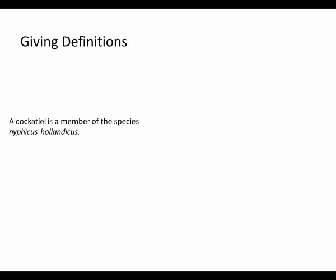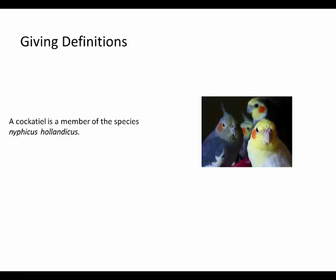For example, if somebody doesn't know what a cockatiel is and they ask you, you could look it up in the dictionary and find something like 'a cockatiel is a member of the species Nymphicus hollandicus.' On the other hand, someone could show them pictures of cockatiels and say, 'a cockatiel is a bird like this or other similar related birds.' Which of those two people is going to have a better understanding? I don't think it's going to be the one who looked up that dictionary definition. So sometimes a description like that's not the best.